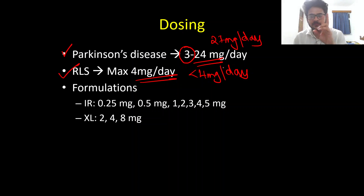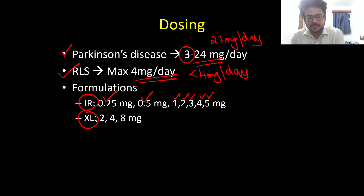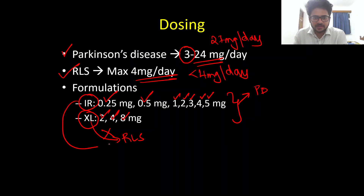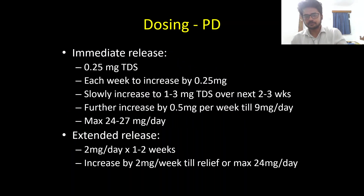We have two formulations of ropinirole: immediate release and extended release. The immediate release comes in multiples of 0.25 — so 0.25 mg, 0.5 mg, and then 1, 2, 3, 4, and 5 mg. The extended release comes in multiples of 2 — so 2 mg, 4 mg, and 8 mg. While both formulations are used for Parkinson's disease, the extended release formulation is not approved for restless leg syndrome — only the immediate release is approved for that indication.